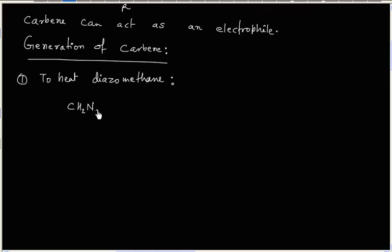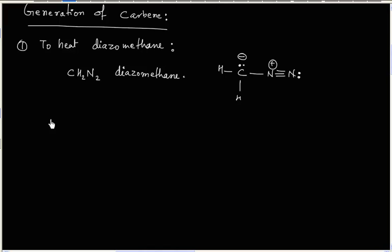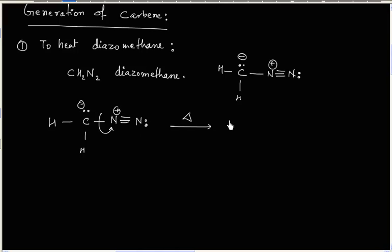CH2N2 is called diazomethane. We can write a Lewis dot structure for this molecule. This is diazomethane. If diazomethane is heated, it can generate carbene. This bond goes here, nitrogen has a positive charge, and a nitrogen molecule is removed. In this way, we can generate a carbene.